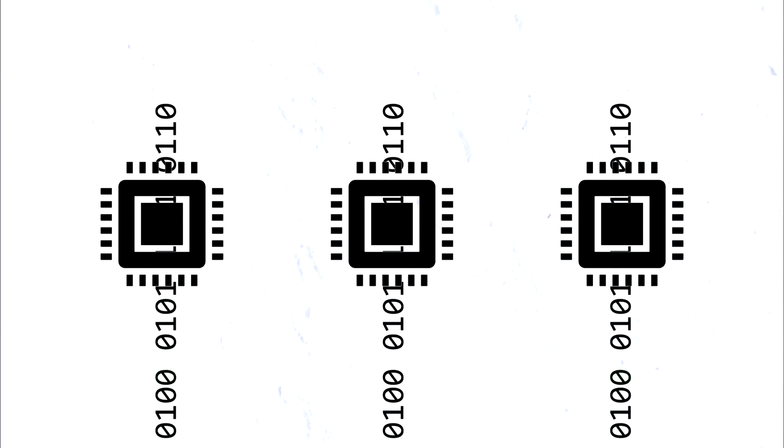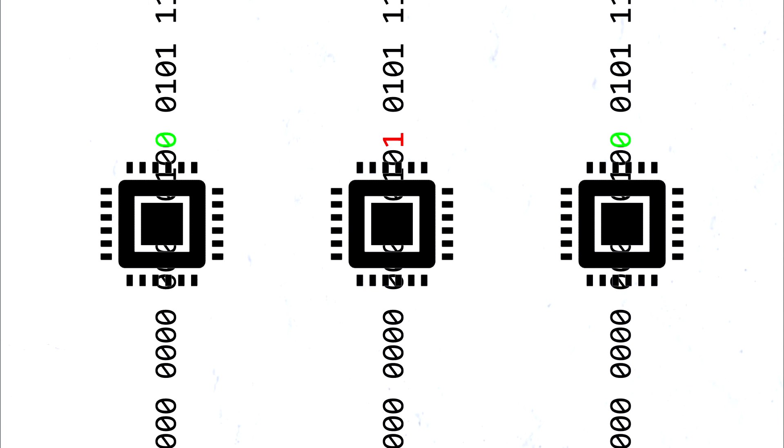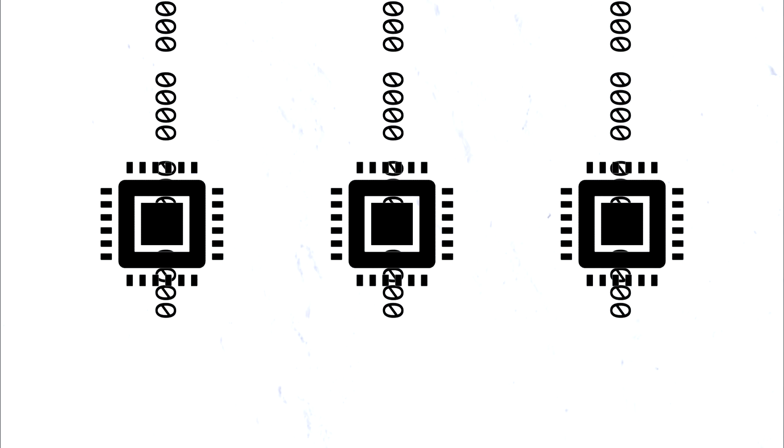But if you have three processors and a bit flip occurs in one of them, you can trust the other two that are reporting the same value. Because what are the odds that two simultaneous bit flips would happen in two processors? And that's why voting machines use three parallel processors. And so do airplanes and space stations that receive a much higher dose of cosmic particles than we do down here on the ground.